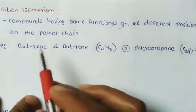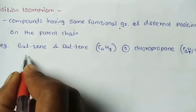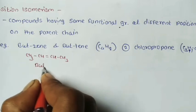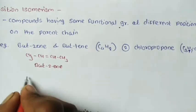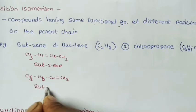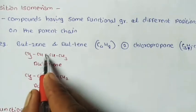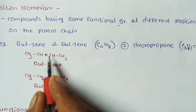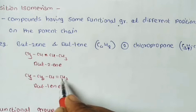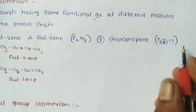For example, but-2-ene and but-1-ene both have molecular formula C4H8. First: CH3-CH=CH-CH3, which is but-2-ene. Second: CH3-CH2-CH=CH2, which is but-1-ene. The double bond is the functional group — it is the same, but its position on the parent chain is different, making these position isomers.